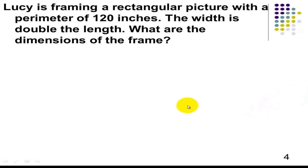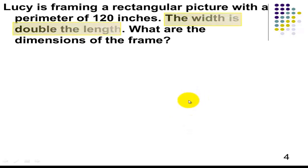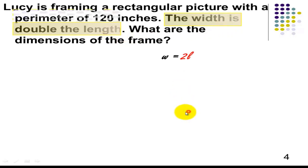Next question. Lucy is framing a rectangular picture with a perimeter of 120 inches. The width is double the length. What are the dimensions of the frame? Let's highlight what is given: the width is double the length. The perimeter is 120, so P equals 120.